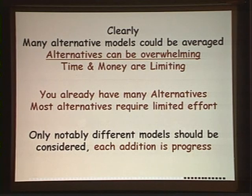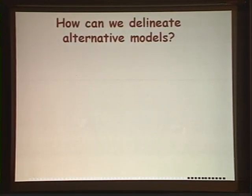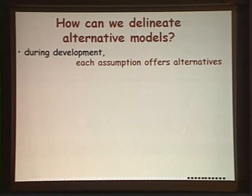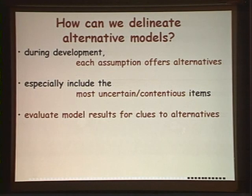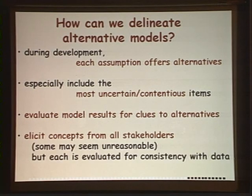We only want to consider notably different models — not small tweaks — we want big changes in concepts. While delineating alternative models is still an area of research, during model development we should note all assumptions as they offer alternatives. We should consider the most uncertain or contentious things, and use results from model work to generate ideas. Most importantly, we should ask our stakeholders for contributions. Even if suggestions seem unreasonable, every model is evaluated for consistency with the data — if a suggestion gets a low weight, fine; if it doesn't, we should ask what we might be missing.